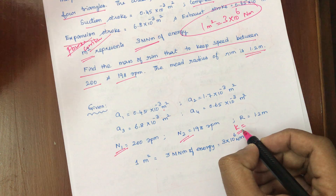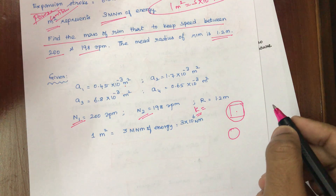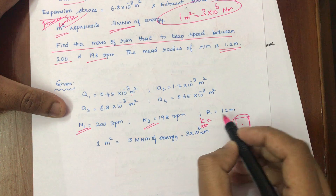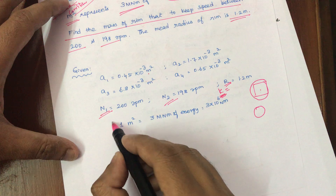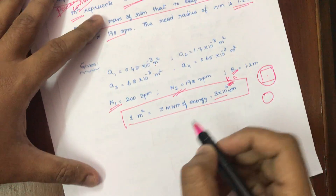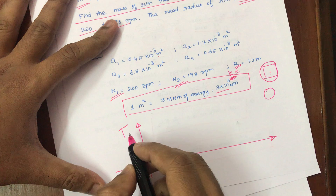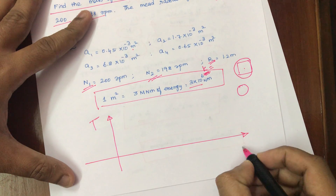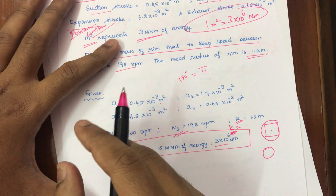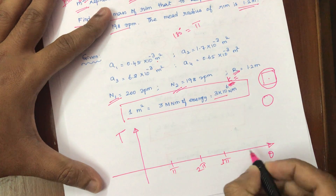The given data: 4 stroke engine, 4 areas A1 to A4 in metres squared. Maximum speed N1 = 200 rpm, minimum speed N2 = 198 rpm (stated earlier as 190 in the problem). Radius of gyration K = 1.2 m. Scale: 1 m² = 3 MN·m = 3 × 10⁶ N·m. To draw the turning moment diagram: Y-axis is turning moment (torque), X-axis is angle (theta). For a 4-stroke engine, there are 4 strokes each of π radians: π, 2π, 3π, 4π — giving suction, compression, expansion, and exhaust.